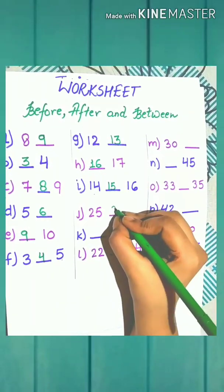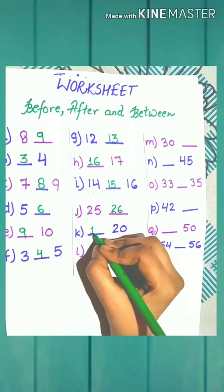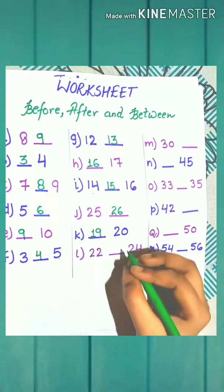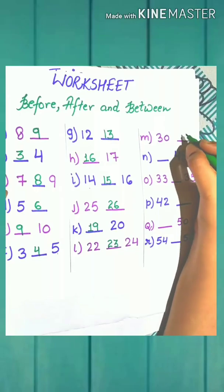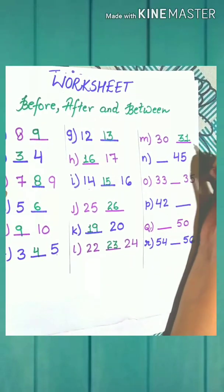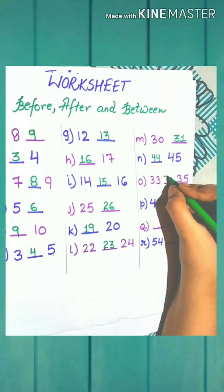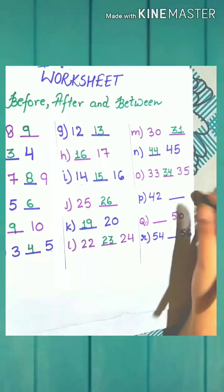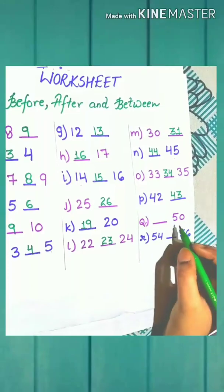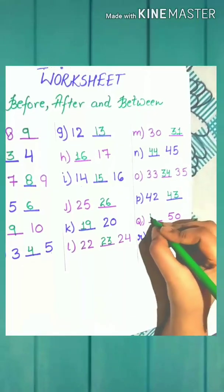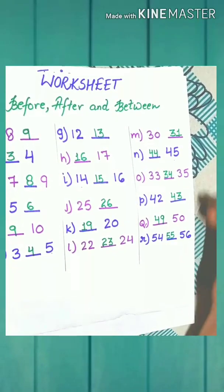What comes after 25? 26. What comes before 20? 19. What comes between 22 and 24? 23. Good! What comes after 30? 31. What comes before 45? Yes! 44. What comes between 33 and 35? 34. What comes after 42? 43. What comes before 50? 49. What comes between 54 and 56? 55. Good!